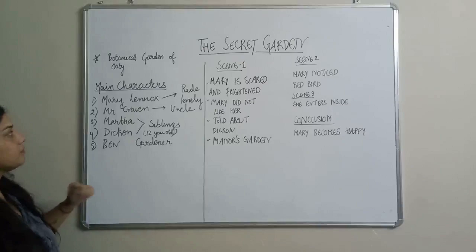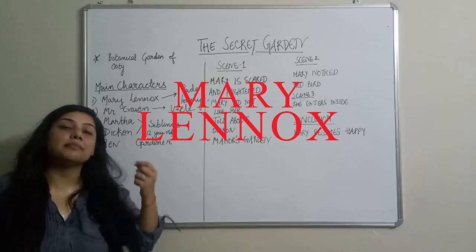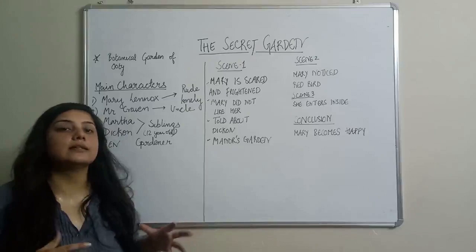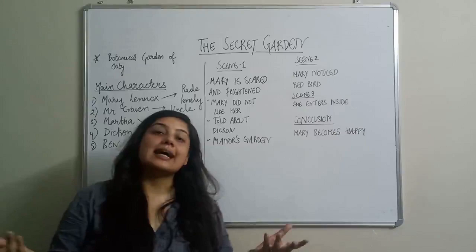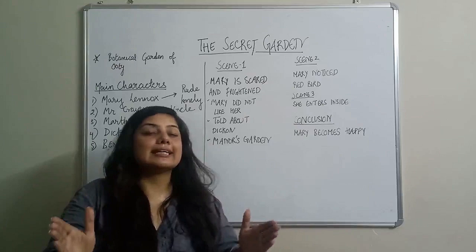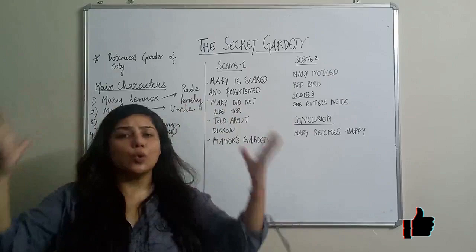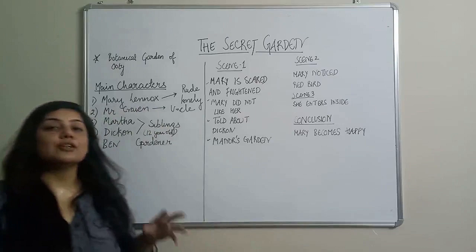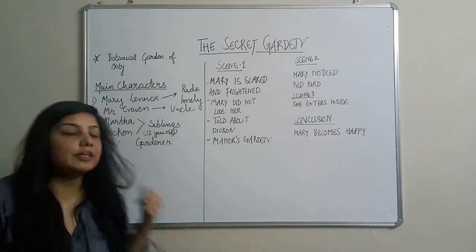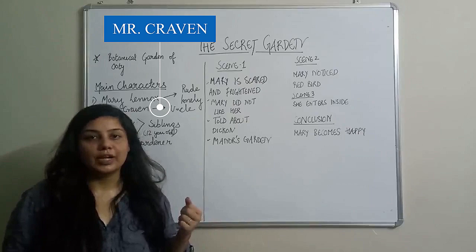First of all, I would like to introduce the main characters. The first is Mary. This is the girl — she is a rude and lonely child. Mary has lost her parents; she is an orphan. Her parents died, and when they died, she was taken to her uncle's home. She was living in her uncle's manor — a manor is a kind of a huge old house built in an old structure. The name of the uncle is Mr. Craven.